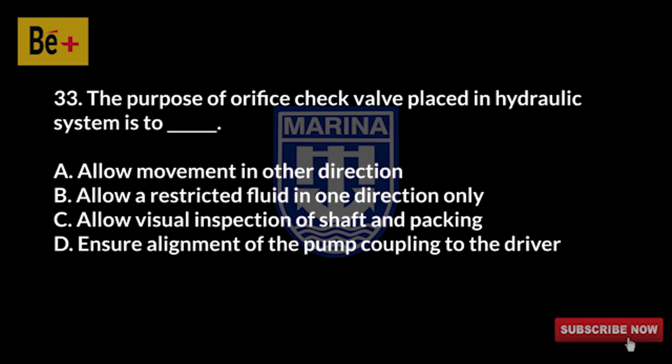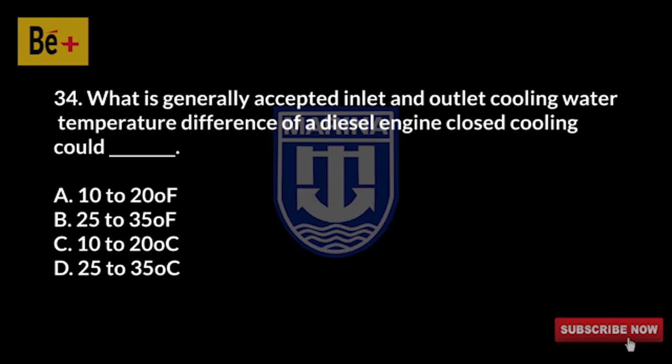The purpose of an orifice check valve placed in a hydraulic system is to: A) allow movement in other direction, B) allow restricted fluid in one direction only, C) allow visual inspection of shaft and packing, D) ensure alignment of the pump coupling to the driver. The answer is B, allow restricted fluid in one direction only.